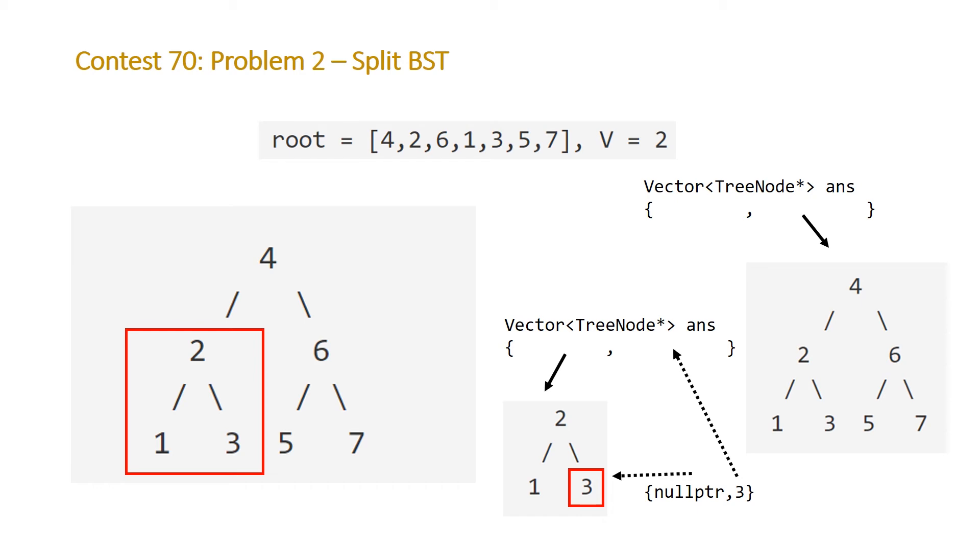So once we do that our vector in the second call to our recursive function will now look like this and we will then return that back to the first call of our original function which was processing the root node. For that case we will put the three in the location of the left child of the root and our first element will go in the first element of our original two element vector. So once we do that we will end up with our solution and we can just return this.